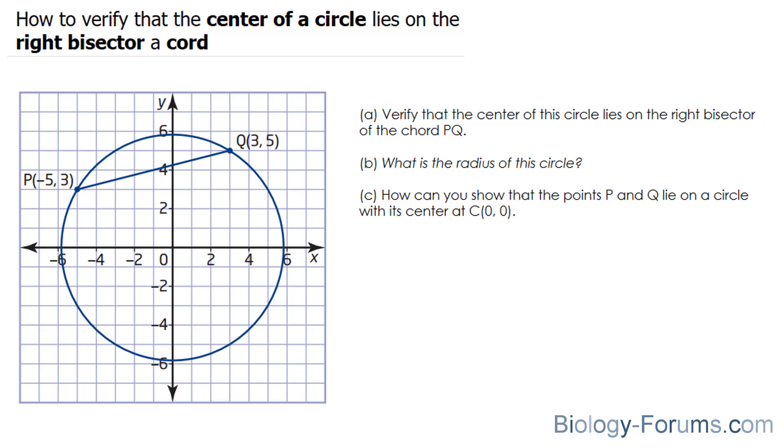In question B, it says, what is the radius of the circle? And since it has a center at 0 and 0, we can easily use the formula r is equal to square root of x squared plus y squared and substitute one of the points that you have. And lastly, how can you show that the points P and Q actually lie at the center of 0 and 0?